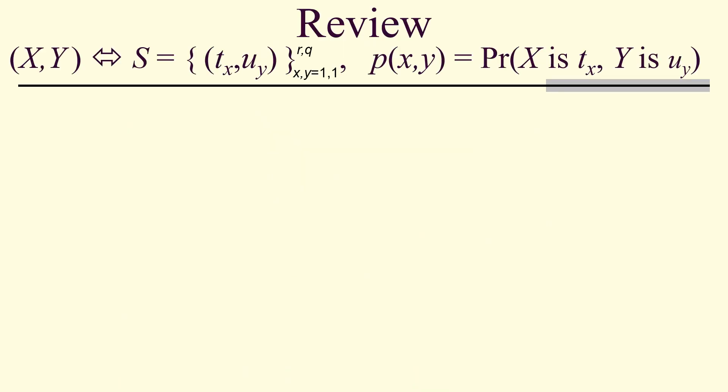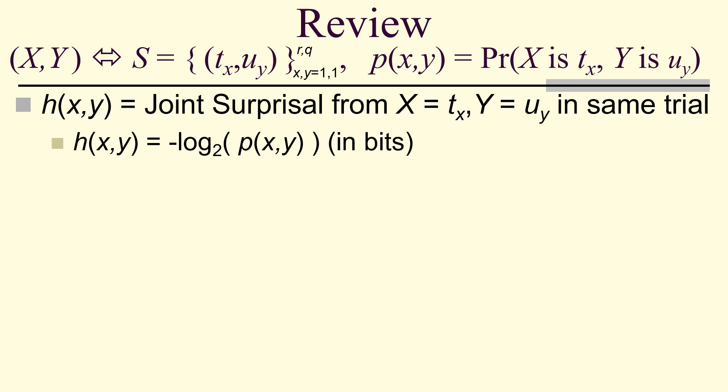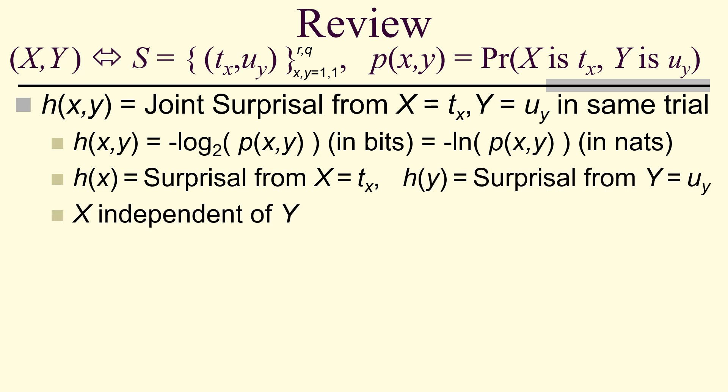Let's review. Suppose we have a joint probability distribution. We get joint surprisal from x being t sub x and y being u sub y in the same trial. It's the negative base-2 logarithm of p of x, y in bits, or the negative natural log of p of x, y in NATs. So h of x is the surprisal from x equals t sub x, and h of y is the surprisal from y equals u sub y.